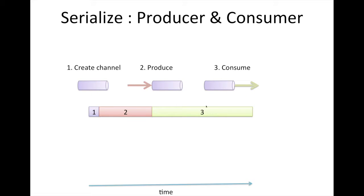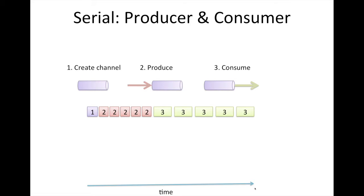What I'm going to do is start off by revisiting an example we did in chapter six, seven, section four, where we had a channel. We created a channel, we had a producer — a function called producer that produced some values into that channel, then it closed the channel and returned. Then we were able to invoke the consumer, which would consume those values from the channel and read them out. We can assume the producer is producing values into a channel and the consumer does some computation. This is sort of meant to illustrate time — you might not spend a lot of time producing the numbers, but you might spend a lot more time consuming them.